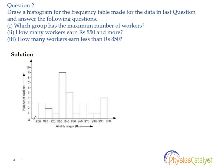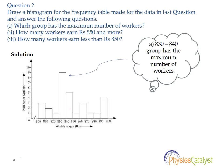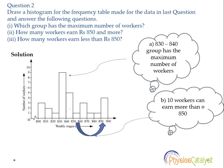In a histogram, the maximum height represents the maximum frequency. In this case, the 830 to 840 group has the maximum number of workers. For the second question — how many workers earn rupees 850 and more — in the frequency distribution graph we look at all the bars after the interval 840 to 850.